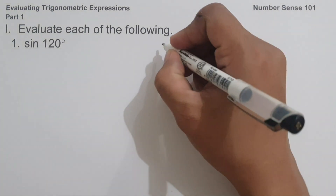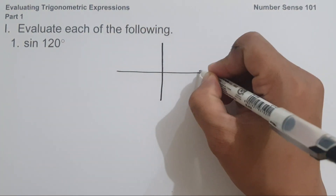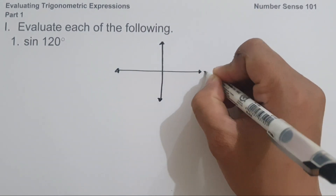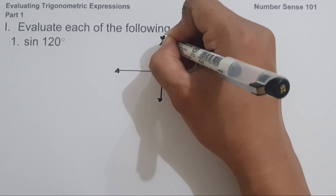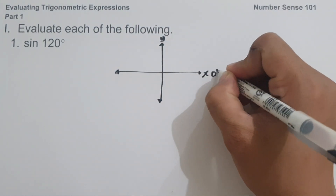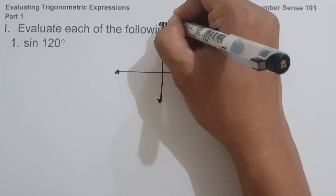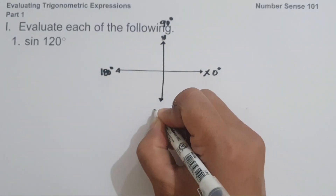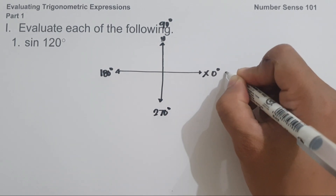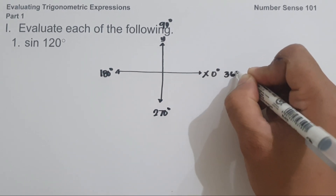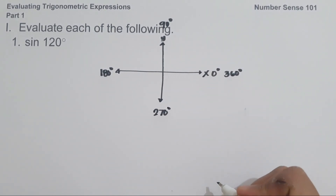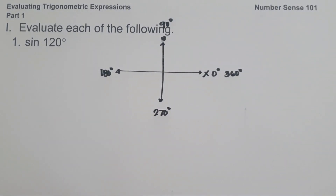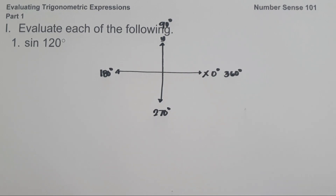Let's say for example, if we are going to have a Cartesian coordinate plane, this will be our x-axis and this will be our y-axis. So this is 0 degrees, this is 90 degrees, this is 180 degrees, this is 270 degrees, and lastly this is 360 degrees. The x and y-axis divide the Cartesian coordinate plane into 4 quadrants.